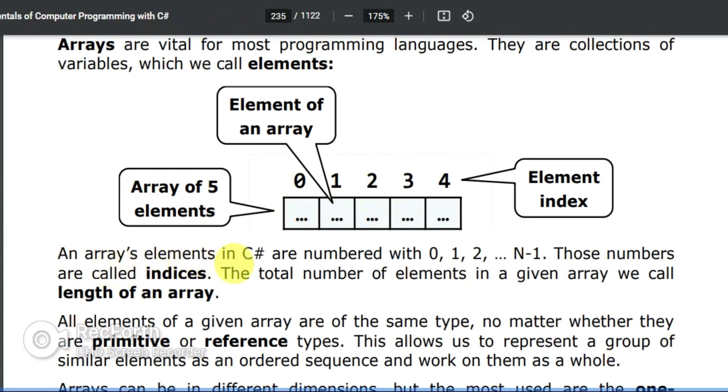Elements in C# are numbered with zero, one, two, up to n minus one. Those numbers are called indices. The total number of elements in a given array we call length of an array.